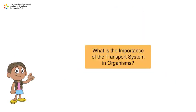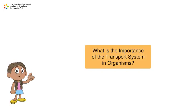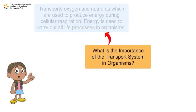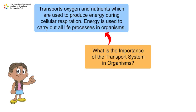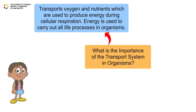What is the importance of the transport system in organisms? The transport system helps to transport oxygen and nutrients, which are used to produce energy during cellular respiration. Energy is then used to carry out all life processes in organisms.